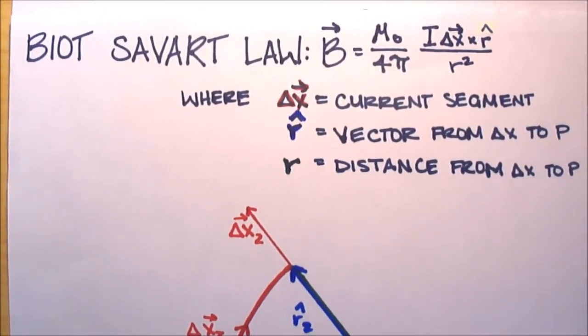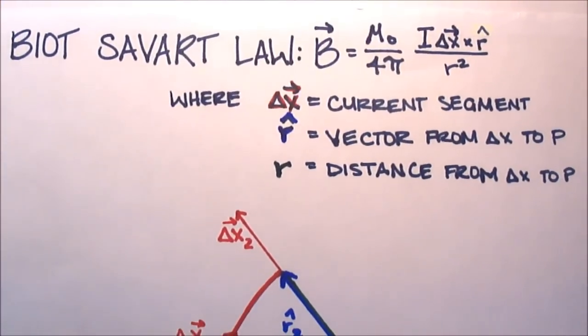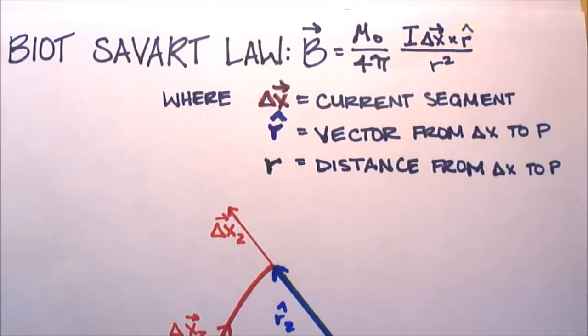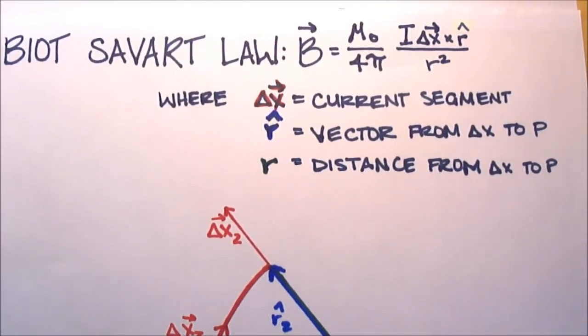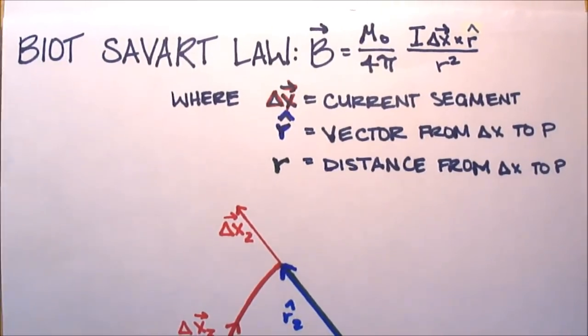We're going to start by listing the Biot-Savart law, which says that your magnetic field, or B field, will equal μ₀ over 4π times I Δx⃗ cross product r̂ divided by r².